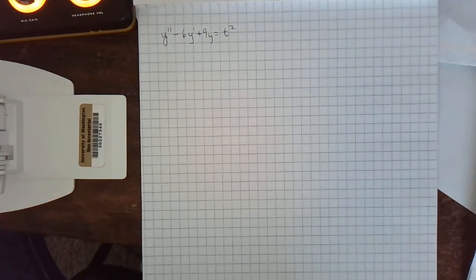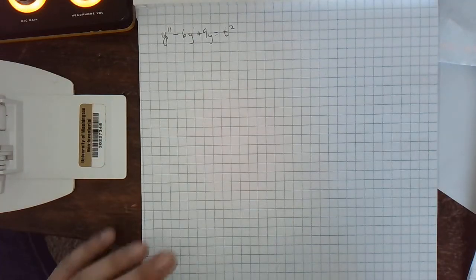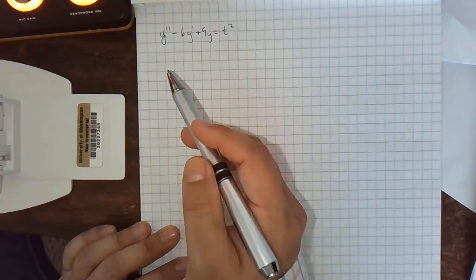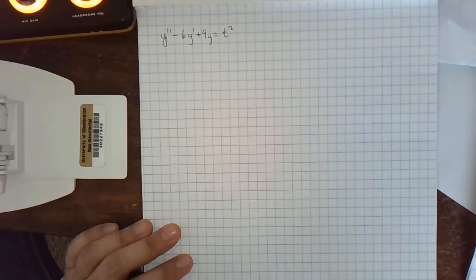All right, so I want to make sure you get enough examples of the method of undetermined coefficients. So I'm going to do an example of every type. So here's one where the right-hand side is a polynomial.